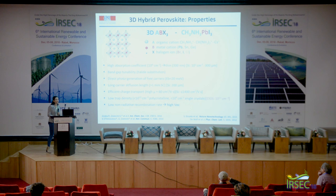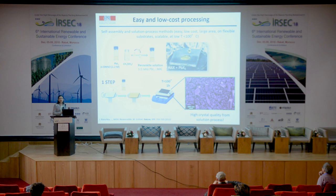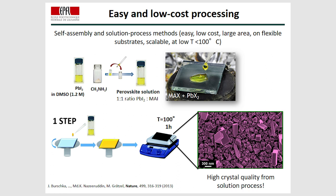These materials are also very easy to prepare in the lab. By combining the precursor solution — the organic cation and the lead iodide in the corresponding solvent — it is possible to deposit them on different substrates, including flexible ones. After annealing at temperatures lower than 100 degrees, it is possible to obtain very high crystalline quality material.